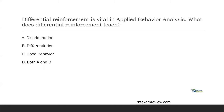Differential reinforcement is vital in applied behavior analysis. We're reinforcing one behavior and putting other behaviors on extinction. This is how we teach and change behavior. What does it actually teach? Answer A — discrimination. Consider an example where I want to teach a child to identify a dog and not a cat. When I say point to dog and they point to the dog, I give them a reinforcer. They point to the cat — it's on extinction. Eventually they learn dog is dog but cat is not dog. They're discriminating between the two animals. Yes, we can teach discrimination.